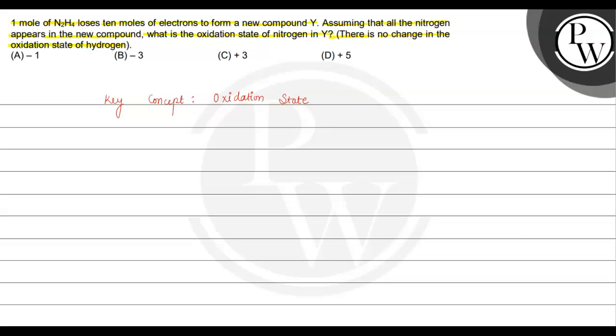Now, in the question, we have 1 mole of N2H4 given. N2H4 loses 10 moles of electrons to form a new compound Y, and all the nitrogen appears in Y.